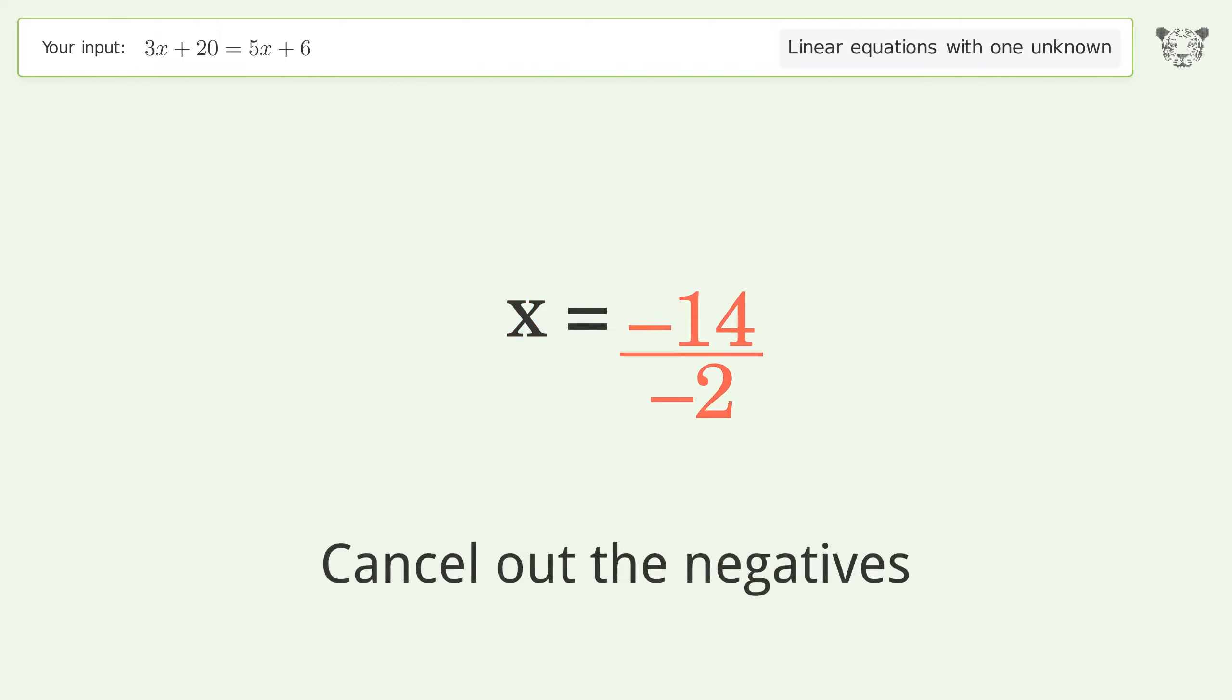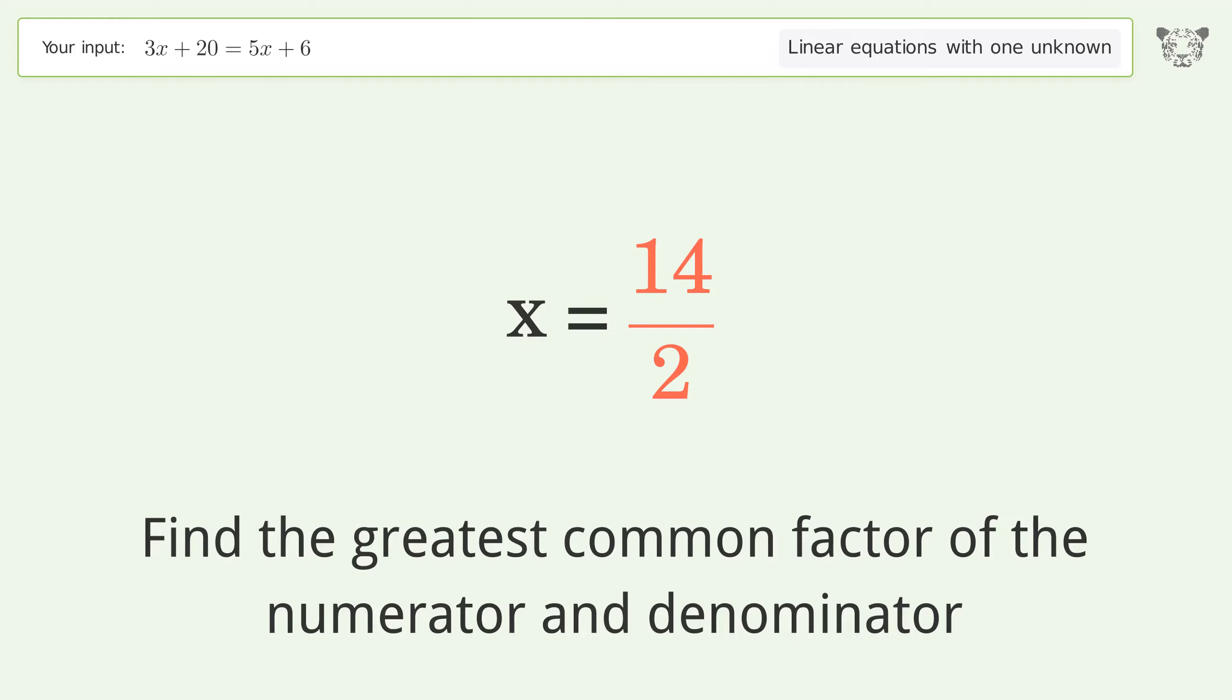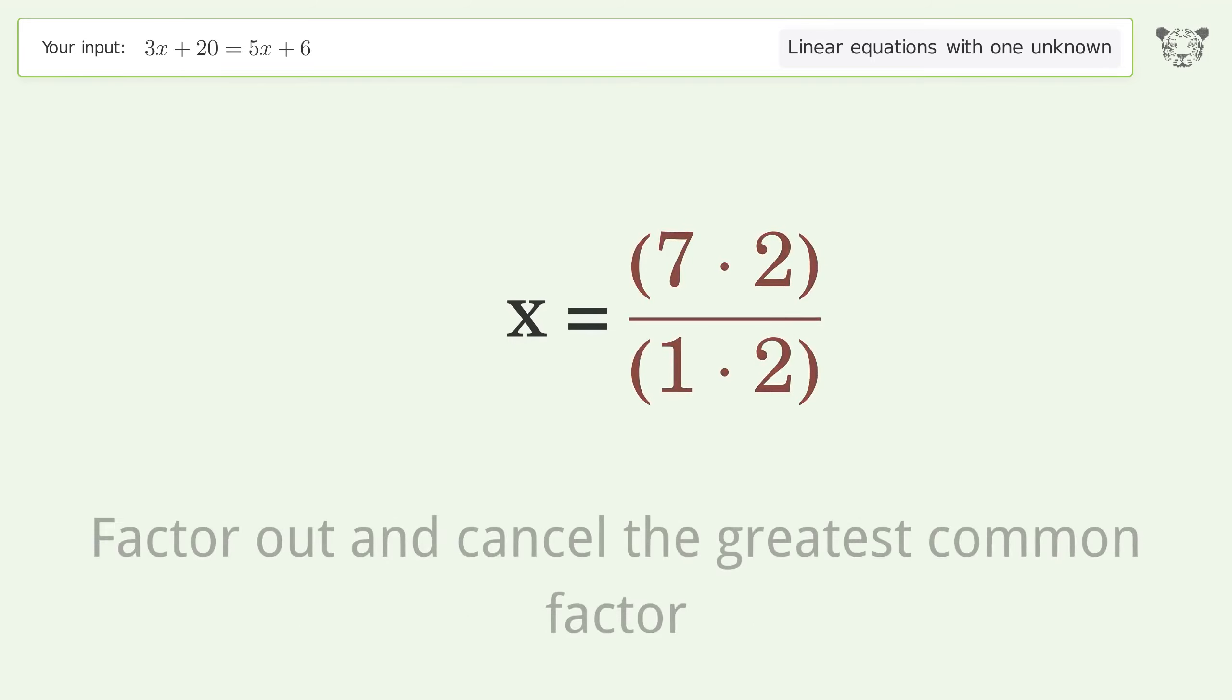Cancel out the negatives. Find the greatest common factor of the numerator and denominator. Factor out and cancel the greatest common factor.